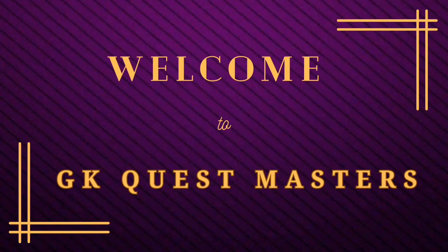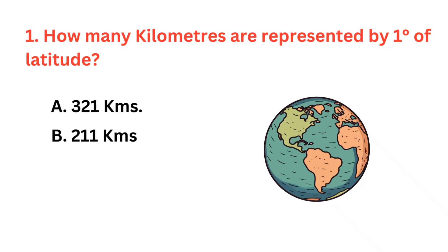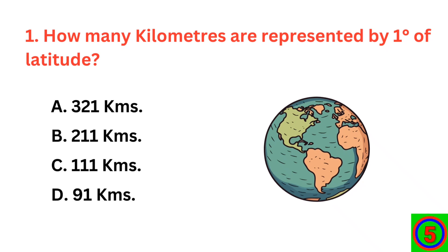Hello friends, let's start another important quiz. How many kilometers are represented by one degree of latitude? The correct answer is option C, 111 kilometers.